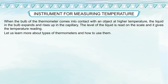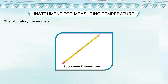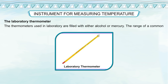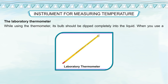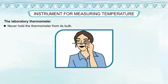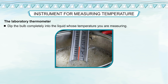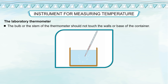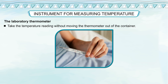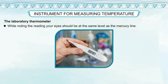The laboratory thermometer: Thermometers used in the laboratory are filled with either alcohol or mercury. The range of a common mercury laboratory thermometer varies from −25°C to 350°C. While using the thermometer, its bulb should be dipped completely into the liquid. When using a thermometer in the lab, be careful: never hold the thermometer from its bulb; keep the thermometer vertical; dip the bulb completely into the liquid being measured; the bulb or stem should not touch the walls or base of the container; take the temperature reading without moving the thermometer out of the container.